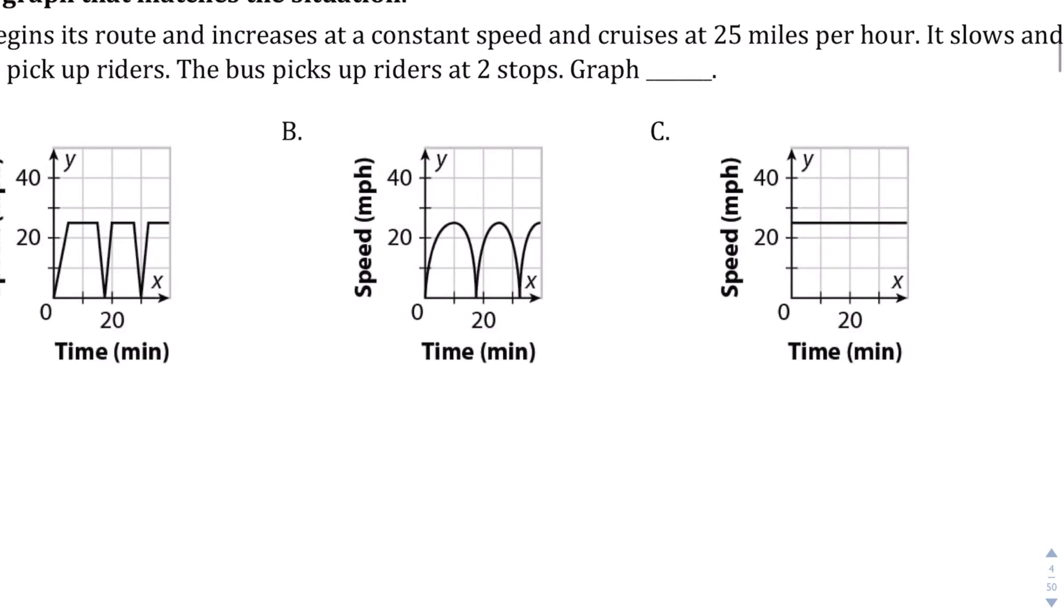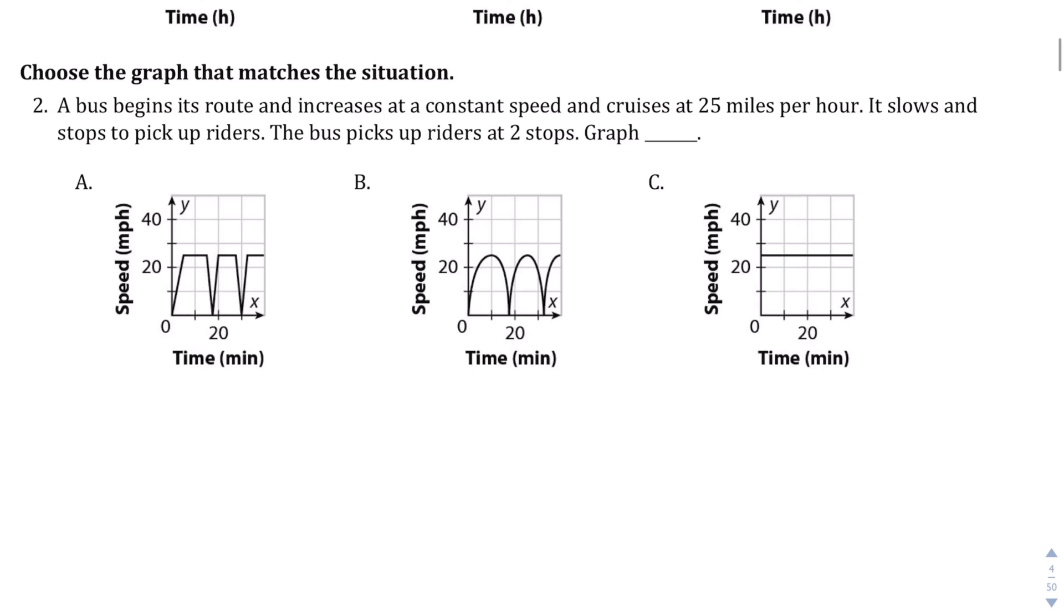Let's take a look at graph B. Or, sorry, question number two. Bus begins its route and increases at a constant speed and cruises at 25 miles per hour. It slows down and stops to pick up riders. So there's multiple parts to this. So let's see.